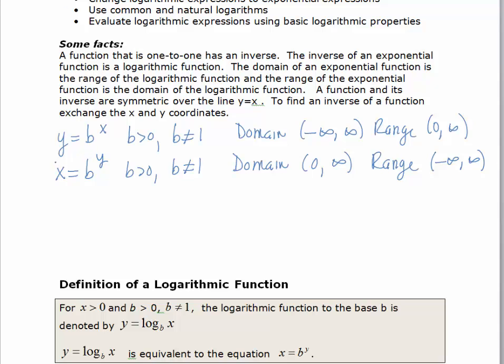Now what's different about this expression, this equation right here, is that y is not isolated. We don't have y in terms of x. And so when this is the case, we call this an implicit equation. And we'd like to write it explicitly.